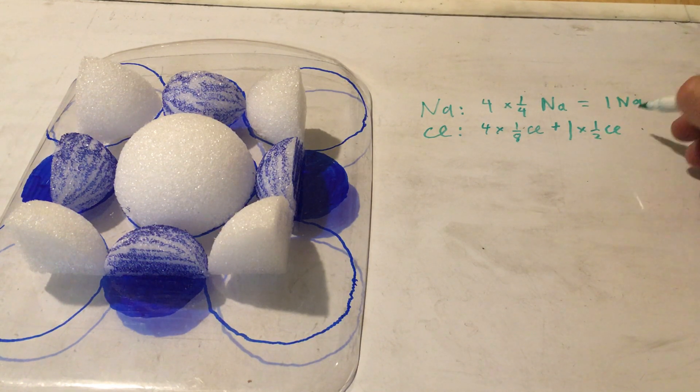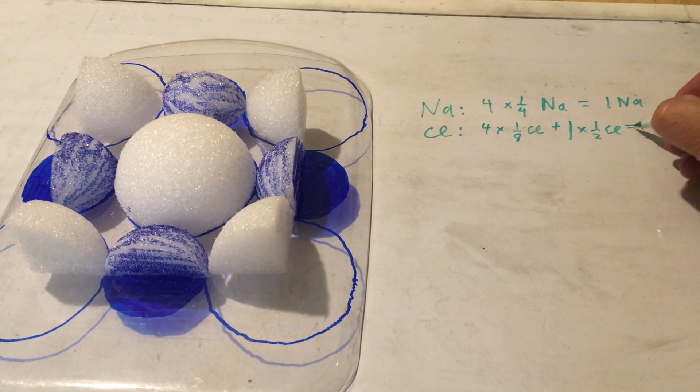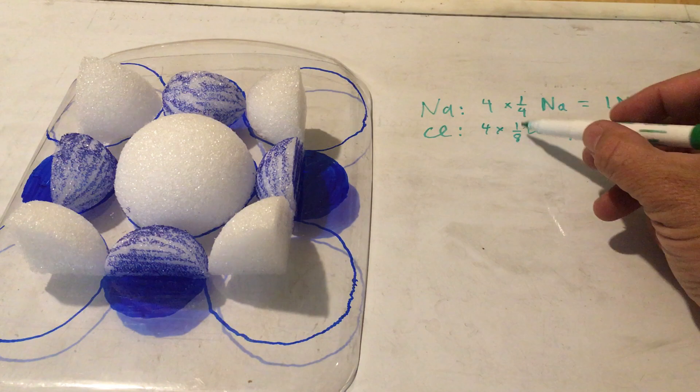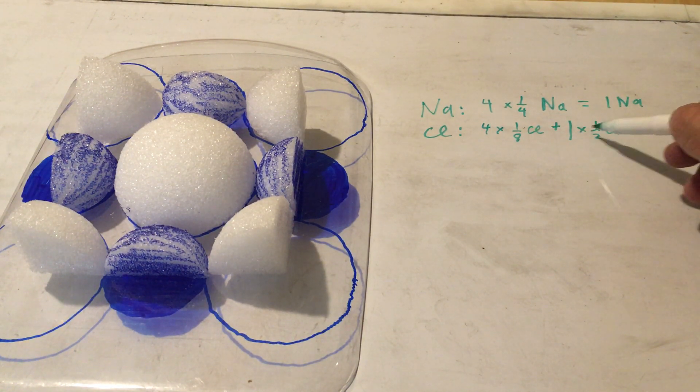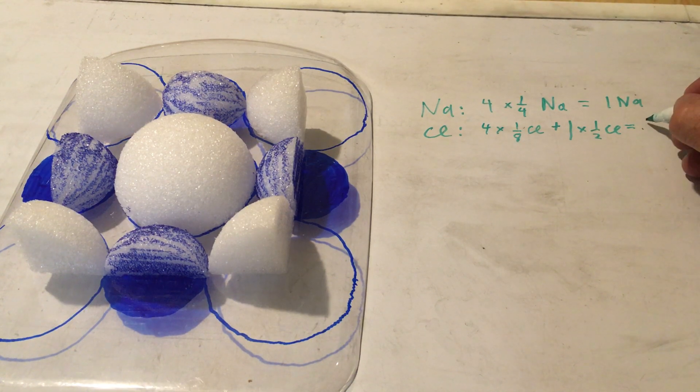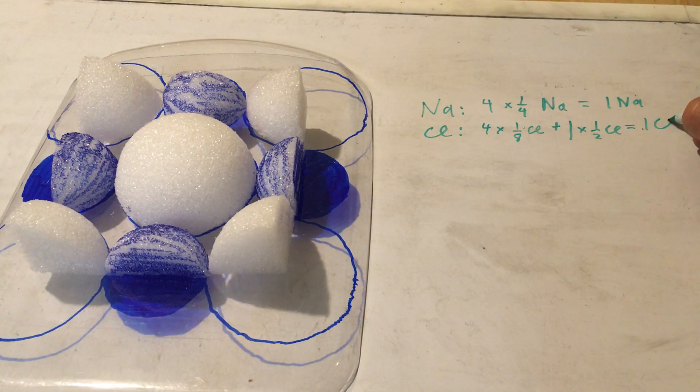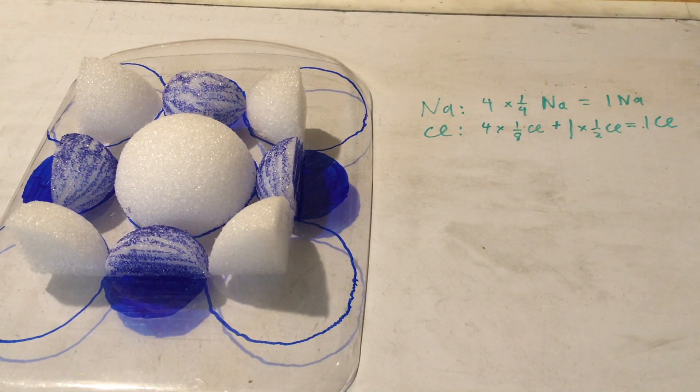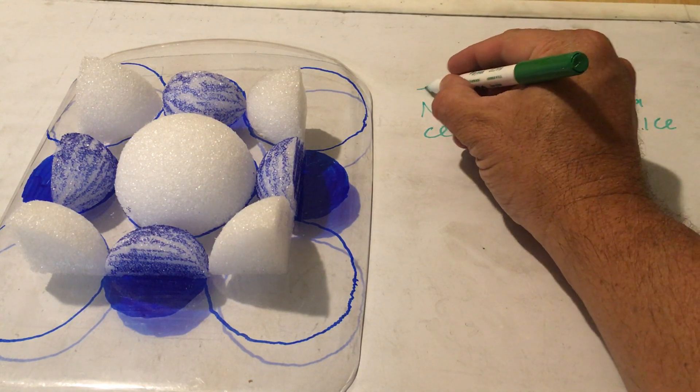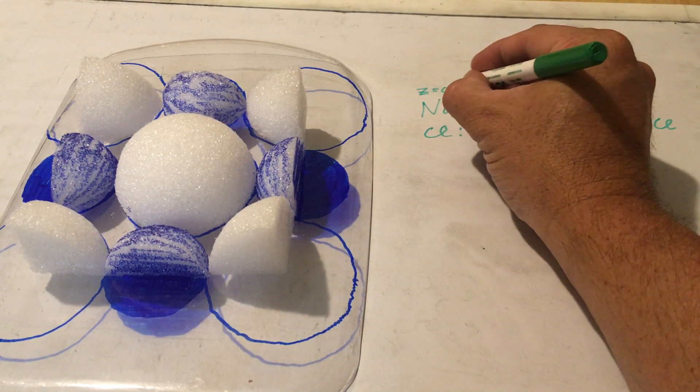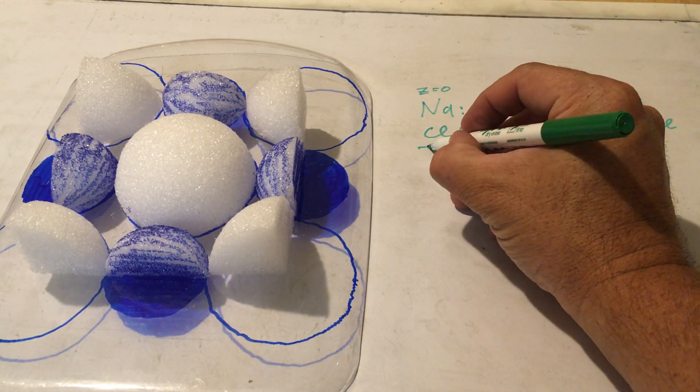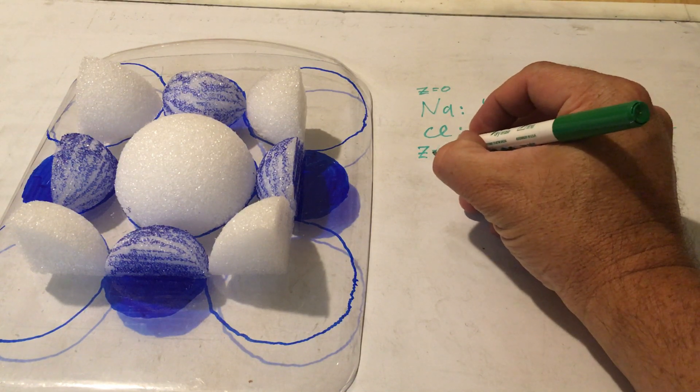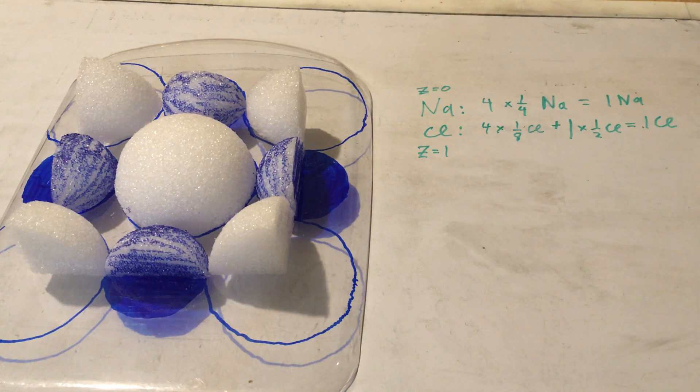And so we have a one-to-one stoichiometry. So on this layer, z equals zero, we have a one-to-one stoichiometry. For the z equals one layer, it's the same thing.